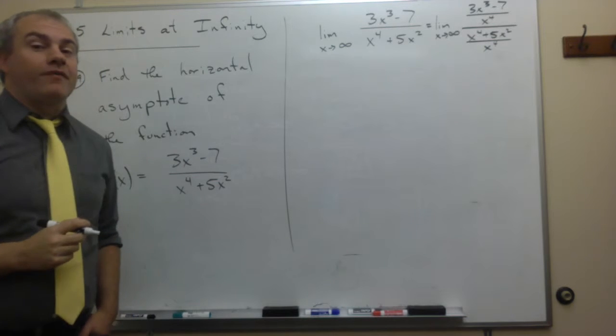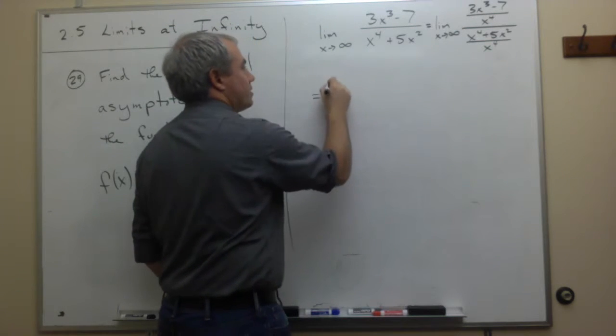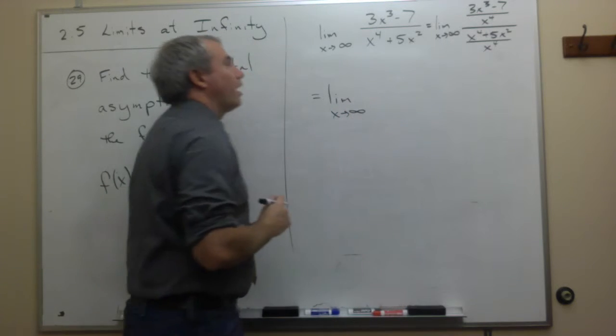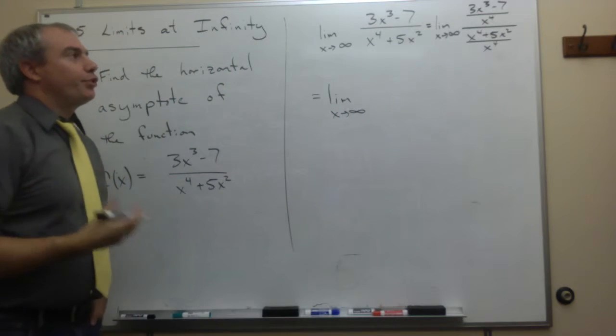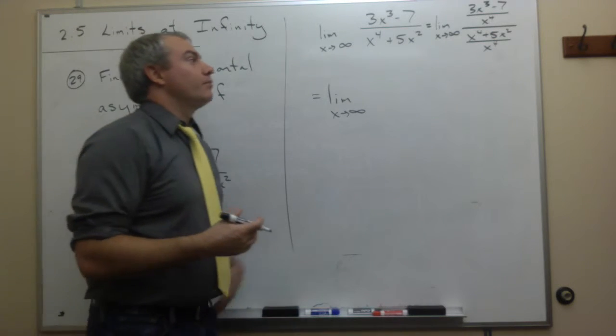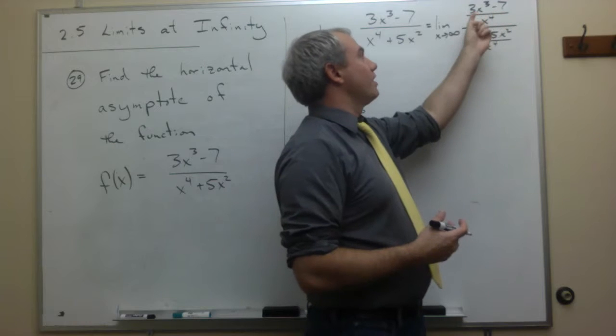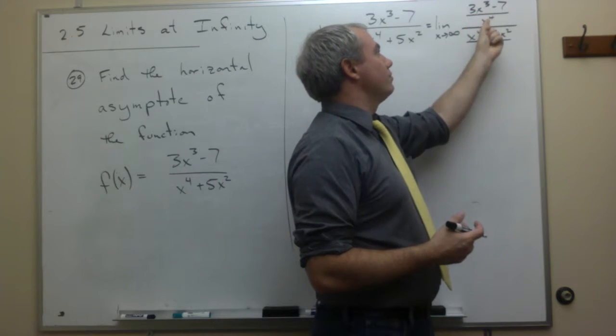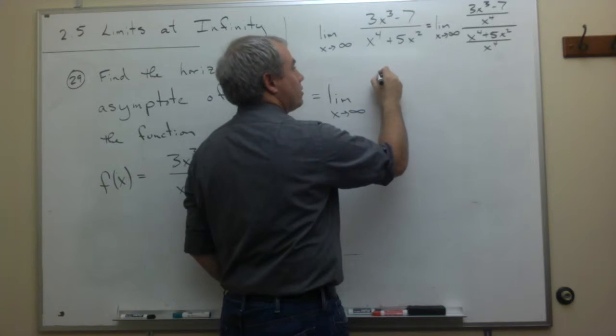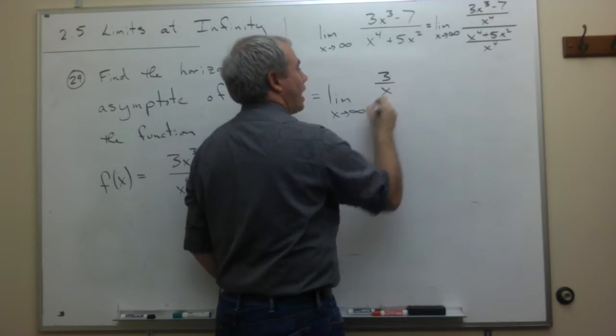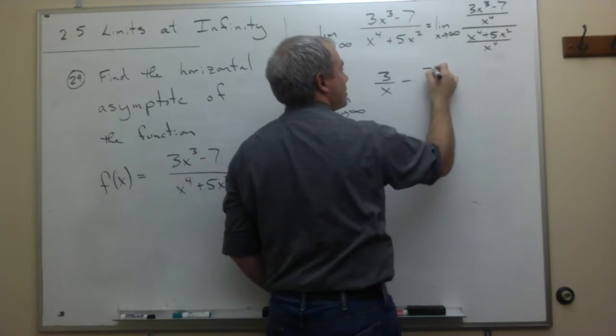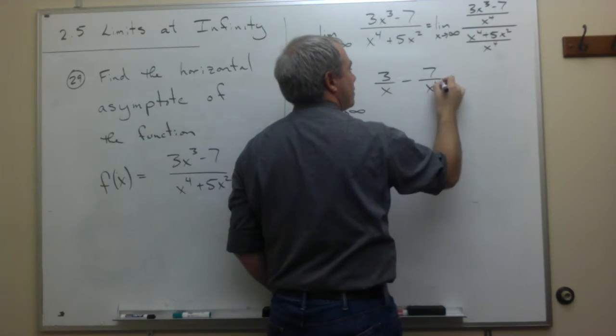Let's simplify that just a little bit. And we get that this is the limit as x goes to infinity of, I've got 3x cubed minus 7 divided by x to the fourth. That can be simplified, broken into two fractions. And the first one would be 3x cubed divided by x to the fourth, or another way of writing that, it's just 3 over x.